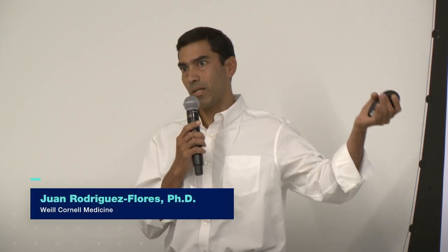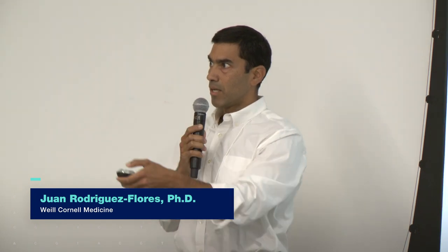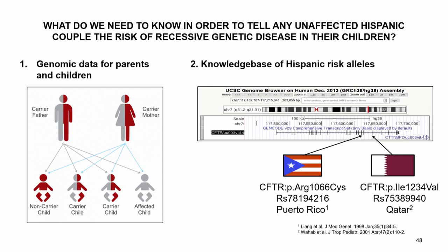I'm going to talk about some research funded in part by the NHLBI and also work done at Cornell — we have a medical school in New York City and one in Qatar, collaborating on projects funded by the Qatar Foundation. The question is: what do we need to know in order to tell any unaffected Hispanic couple the risk of recessive genetic disease in their children? In practice, this is called carrier screening — you want genomic data for both parents.